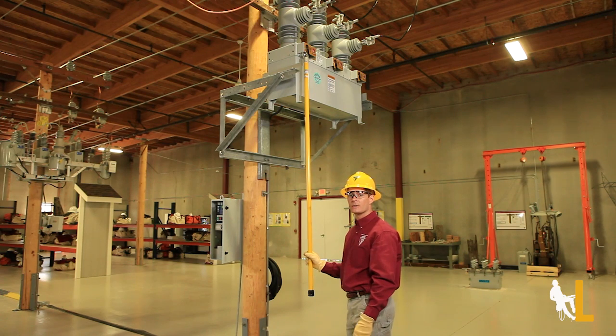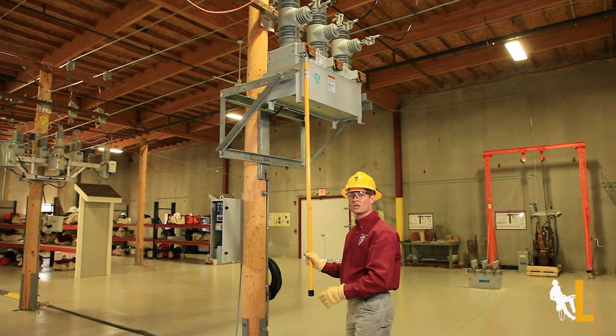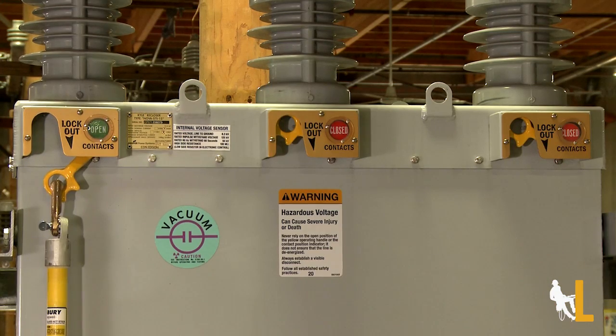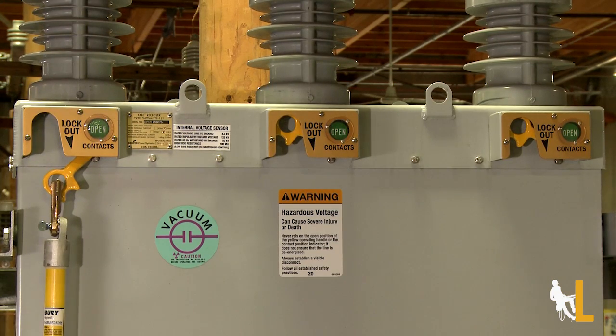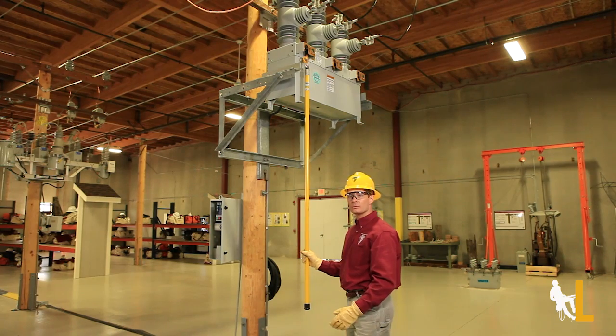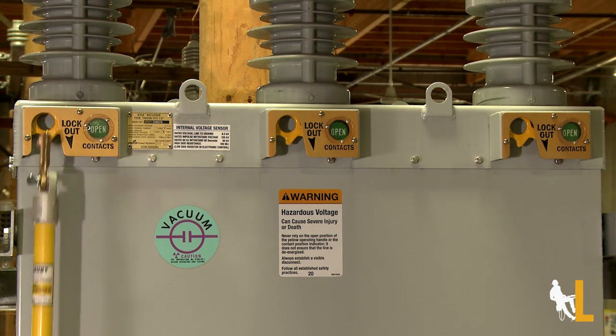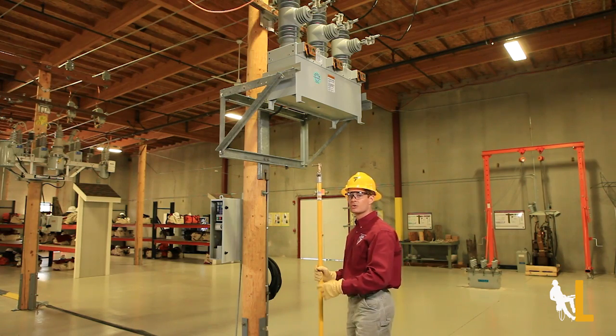Since this recloser is set on a three phase lockout, pulling down on just one yellow handle will open all three phases. If it was set on a single phase lockout, then the yellow handle you pull down would open that phase. To close the recloser, go ahead and push the yellow handle back up. But this does not actually close the recloser. It can only be done from the control panel.